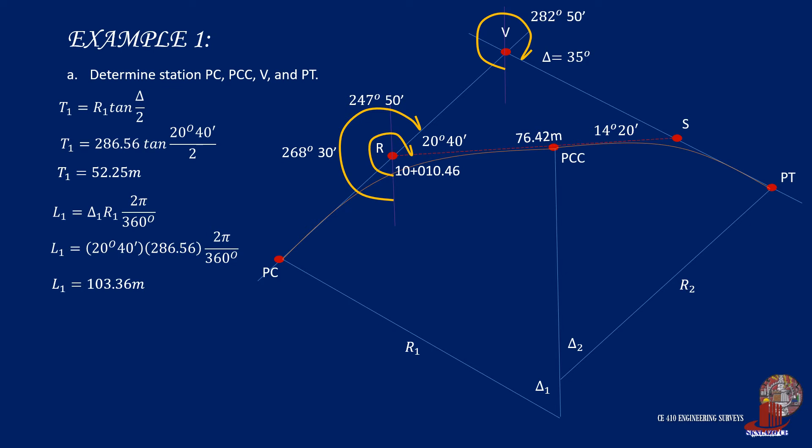So, to answer the required, take station at point R, which is 10 plus 10.46, then deduct the backward tangent T to get the station at PC, which is 9 plus 958.21. Then, add the length of curve 1, that is 103.36, to give the station at PCC, which is 10 plus 61.57.